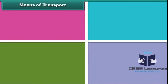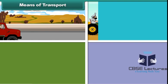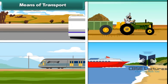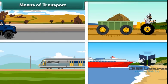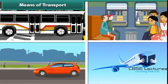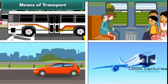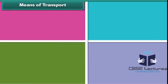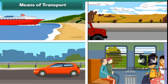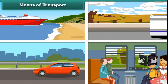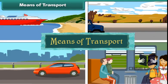Means of Transport. We use trucks, tractors, goods trains, ships and cargo planes to carry goods, and buses, trains, cars and aeroplanes to carry passengers from one place to another. Different carriers of goods, animals and people from one place to another are known as the means of transport.